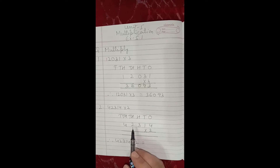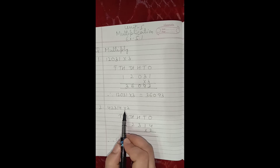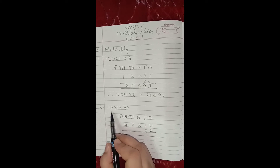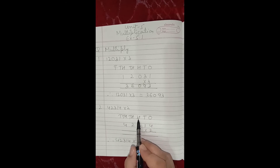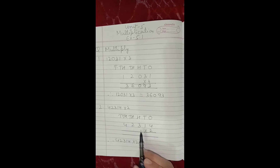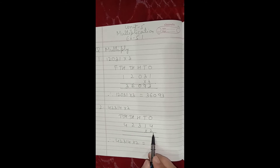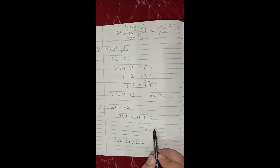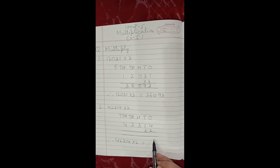Now let us move on to the second sum: 42,314 multiply by 2. It is again a five digit number, so we will write the five places — ones, tens, hundreds, thousands and ten thousands. Then we will write the number according to the places, multiply by 2. The top number is known as the multiplicand. The number by which we are multiplying is known as the multiplier, and the answer which we will get will be known as the product.